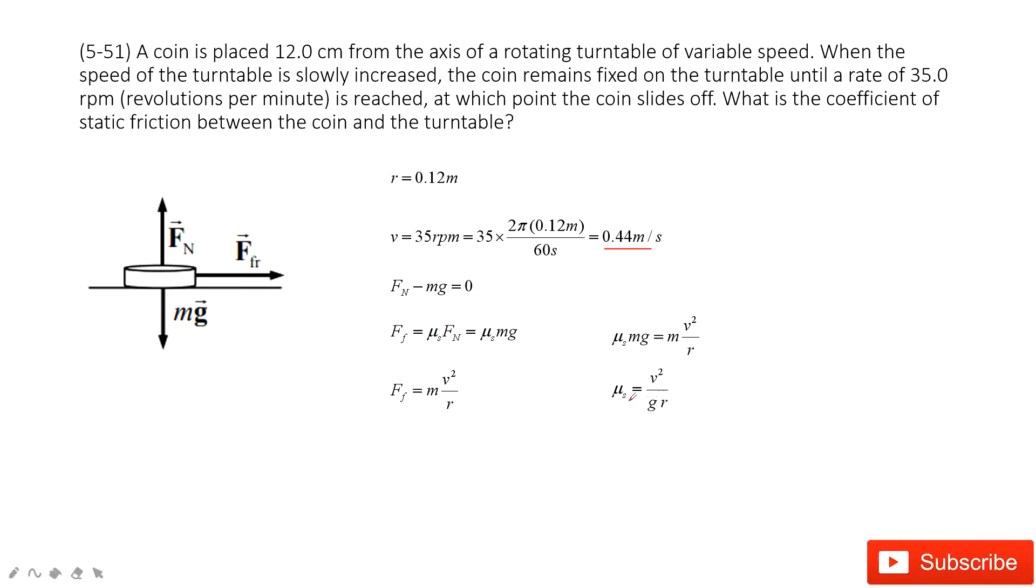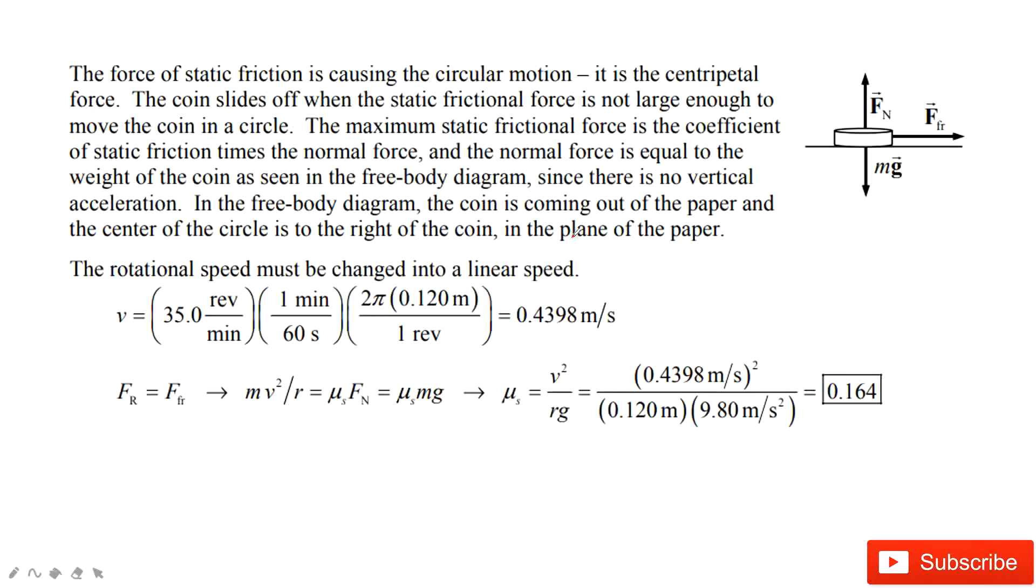Therefore, we can get μs equals v² divided by gr. And you can see there, g is 9.8 meters per second squared, velocity is given, r is given. After you input these quantities, you can get μs equal to 0.164.